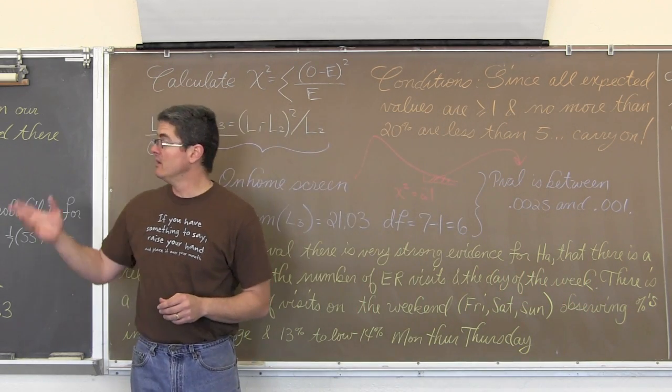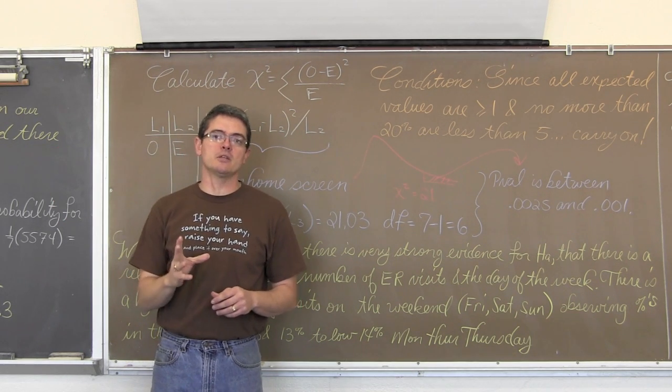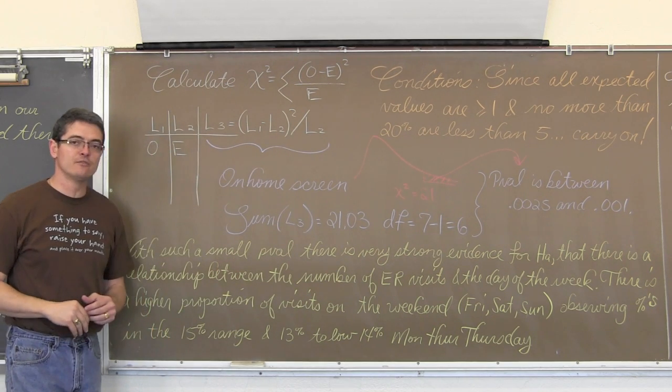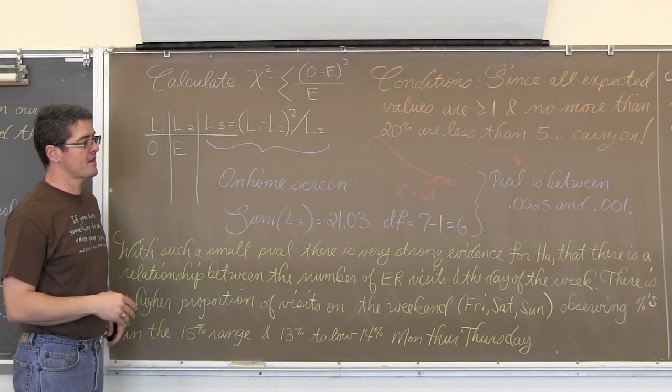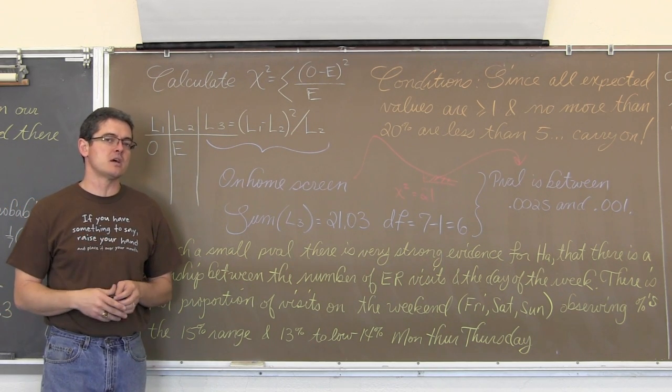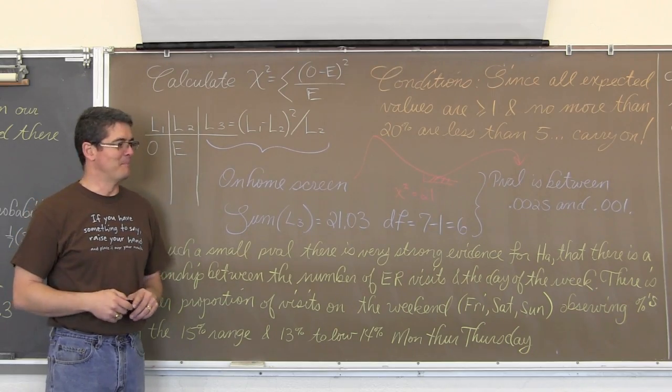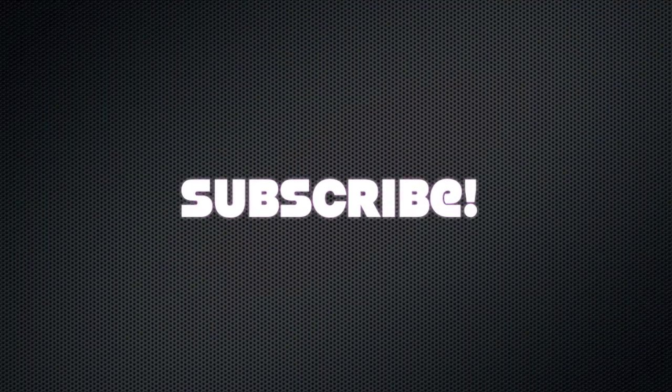So again, you make those observed probabilities or those observed proportions, but they do not come into play until you can say that you have evidence for H sub a that there is that association or that your observed distribution, your observed population does not fit the hypothesized distribution. Okay. Let's talk about...